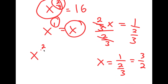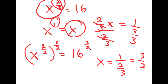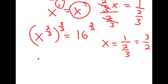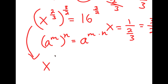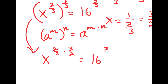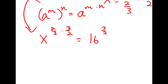So what I'm going to do is take the power of 3 over 2 on both sides. The reason I'm doing this is because if I have something in the form a to the power of m, to the power of n, this is equal to a to the power of m times n. Meaning this is the same thing as x to the power of 2 over 3 times 3 over 2, which is equal to 16 to the power of 3 over 2. And since two reciprocals multiplied together make 1, this is the same thing as x to the power of 1 is equal to 16 to the power of 3 over 2.